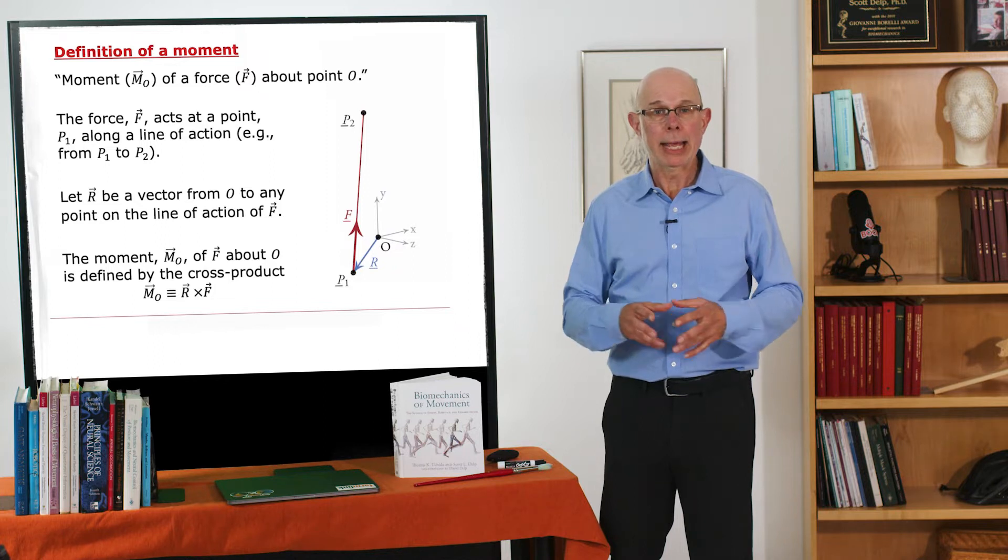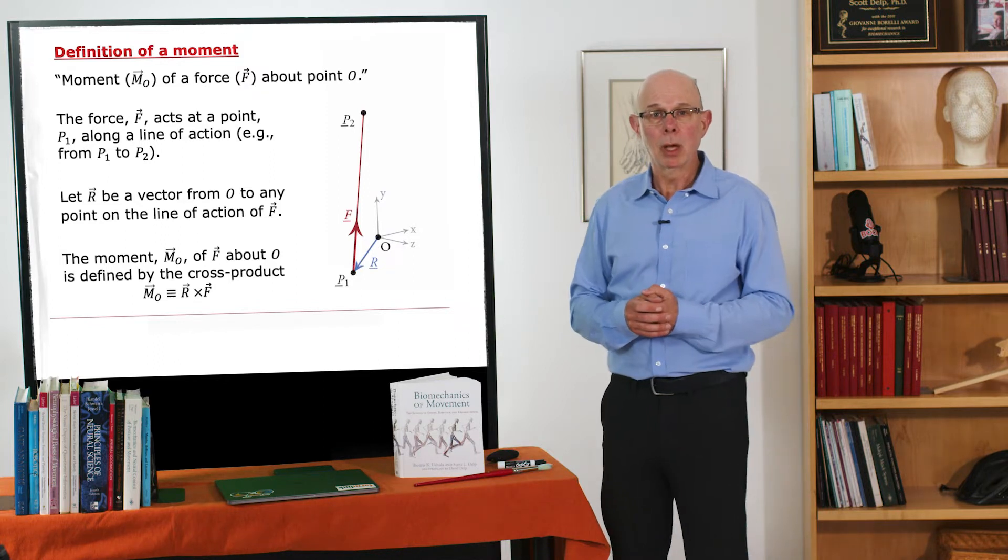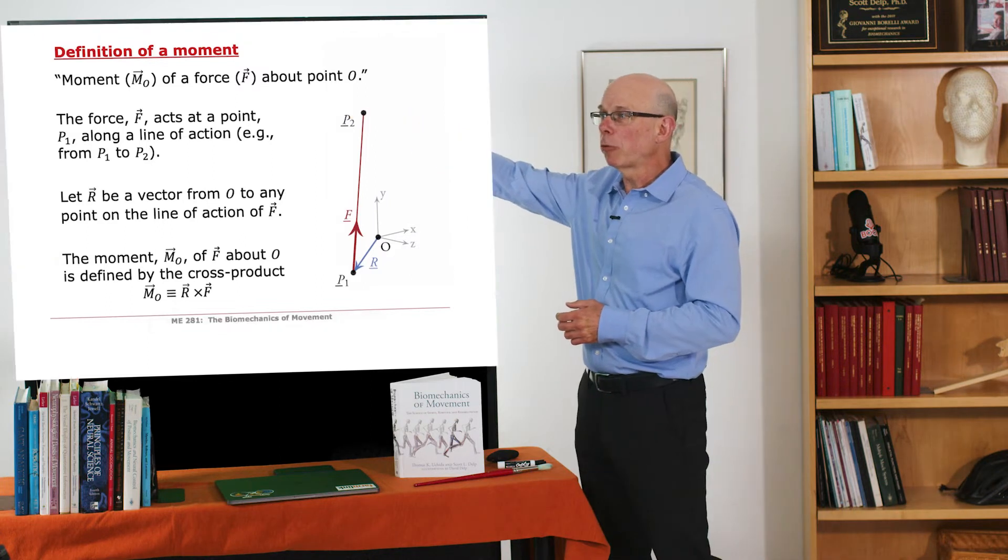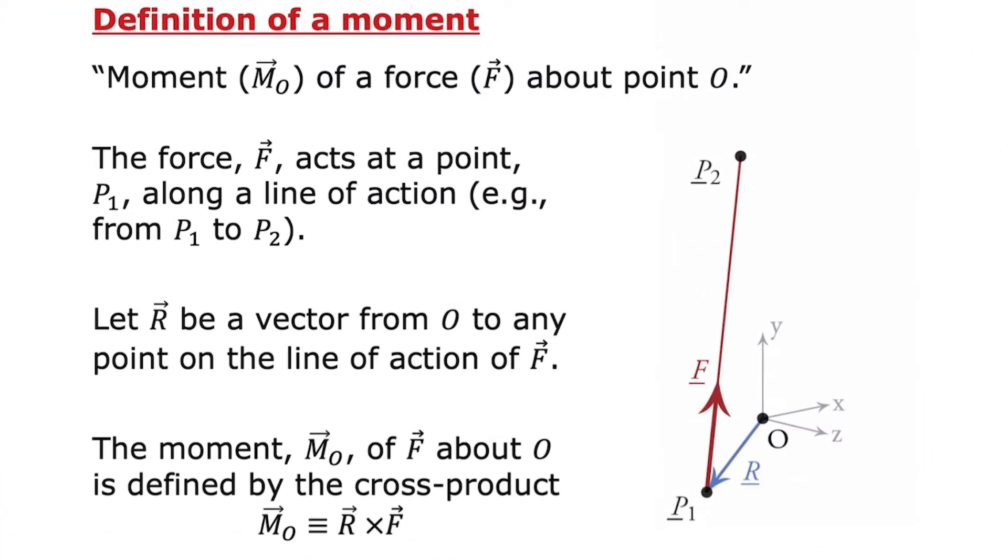This is a mechanical property from basic principles of mechanics where we talk about the moment of a force about point O. So the force F acts along a line of action from P2 to P1. And now we define a vector R that is from O to any point along the line of action.